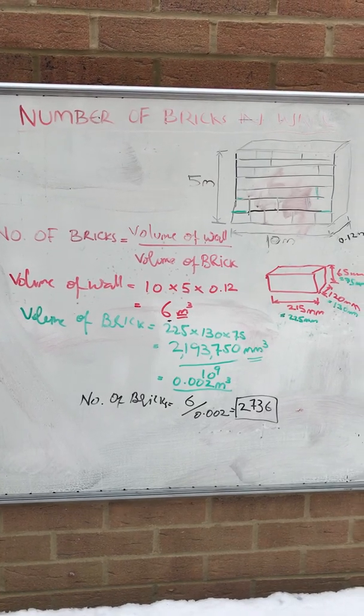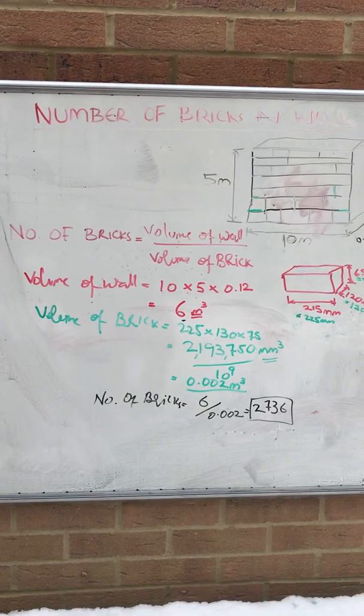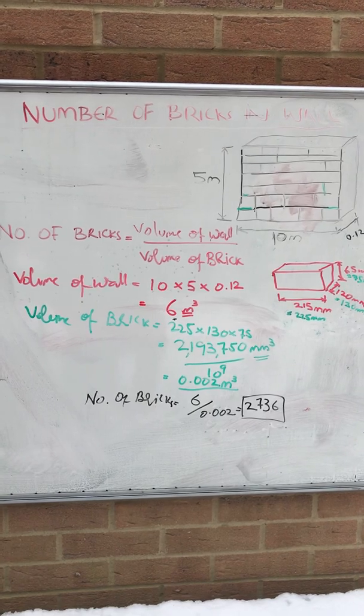This is how you work out the number of bricks in a wall. Number of bricks is equal to volume of the wall divided by volume of the brick.